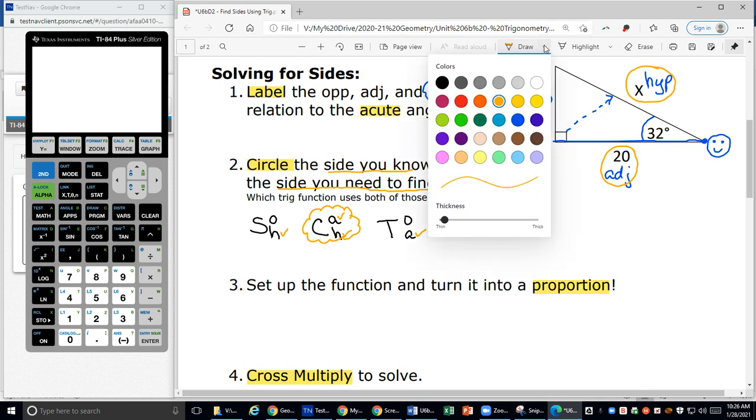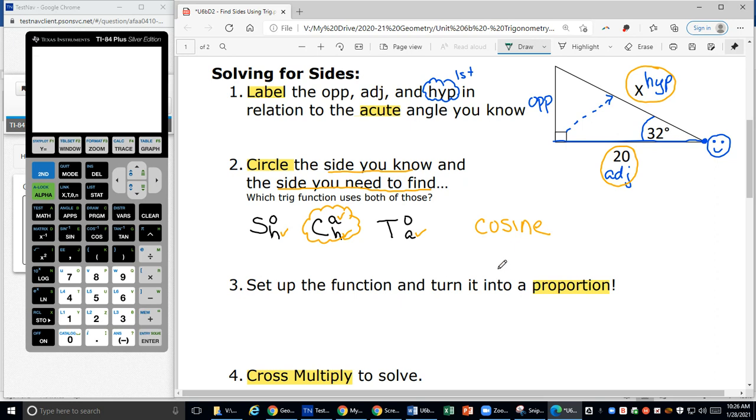Step three is to use that function to set up a proportion. I'm going to come down here. I know a proportion is two fractions that are equal. Yesterday we said the cosine of the angle, which in this case is 32 degrees, so instead of putting the letter that represents the angle, I'm going to put the number of degrees. Equals, and then we did the ratio adjacent over hypotenuse, so the adjacent is 20 over the hypotenuse is X. That's what we're doing when we set up the function.